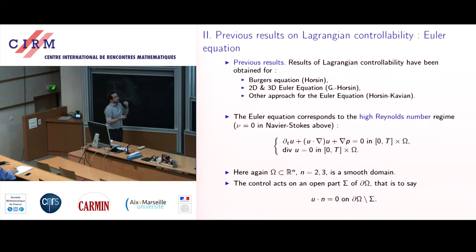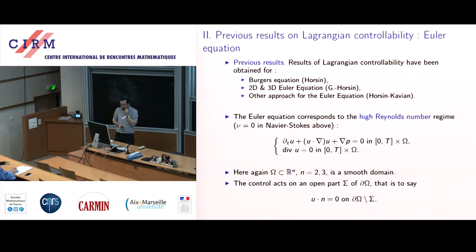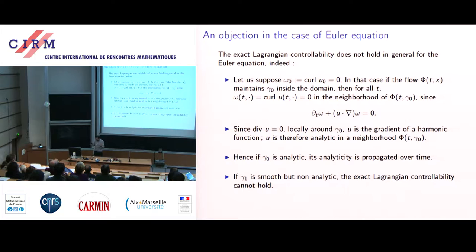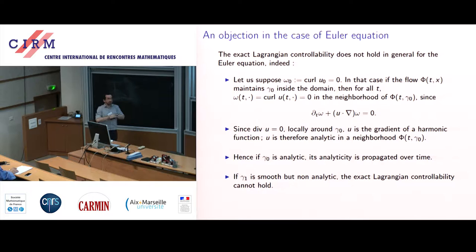The Euler equation corresponds to the case of no viscosity in the Navier-Stokes equation — the so-called high Reynolds number regime. We consider mainly the same question as with incompressible Navier-Stokes, but with the Euler equation. The boundary conditions are not quite the same: you can impose only the normal part of the velocity to be zero on the uncontrolled part of the boundary, since it is a first-order equation rather than second-order like Navier-Stokes.